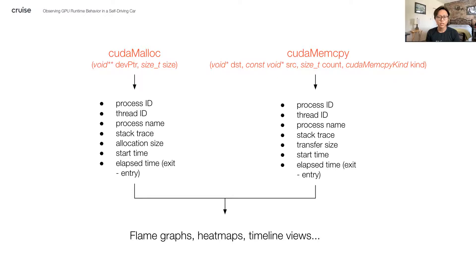By leveraging temporal data we get from BPF, we can also generate timeline views. Feeding data we capture from CUDA memcopy into these visualizations can give us an idea about PCIe bus contention in heterogeneous compute environments.